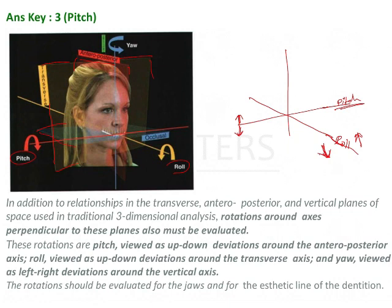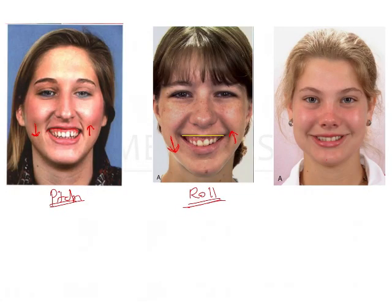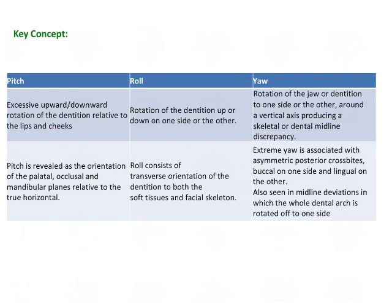The last is yaw, seen along the occlusal plane marked here in blue. Yaw is side-to-side movement along the occlusal plane. Clinically, it appears as midline discrepancies — here you can see the skeletal midline compared to the patient's dental midline, which has shifted towards the left side.